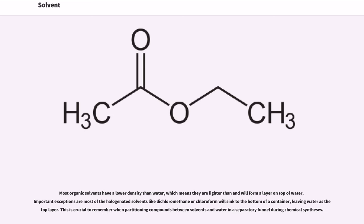Most organic solvents have a lower density than water, which means they are lighter than and will form a layer on top of water. Important exceptions are most of the halogenated solvents like dichloromethane or chloroform will sink to the bottom of the container, leaving water as the top layer. This is crucial to remember when partitioning compounds between solvents and water in a separatory funnel during chemical syntheses.